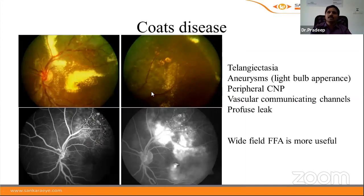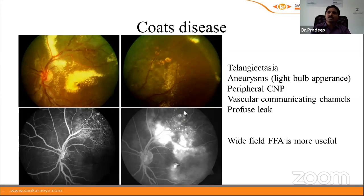Coats disease, predominantly seen in young males, is characterized by peripheral telangiectatic vessels with extensive subretinal exudates. FFA shows telangiectatic vessels, aneurysms with a characteristic light-bulb appearance, peripheral capillary non-perfusion areas, vascular communicating channels, and profuse leak. Wide-field FFA is more useful in Coats disease because the disease tends to be located in the periphery.